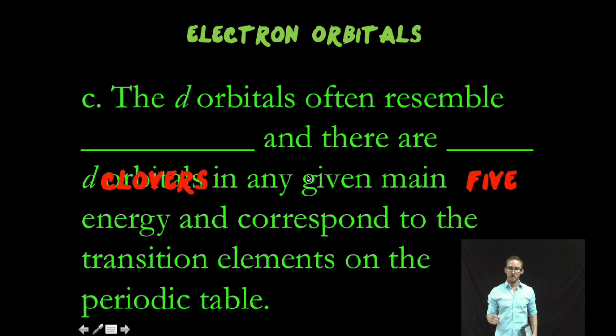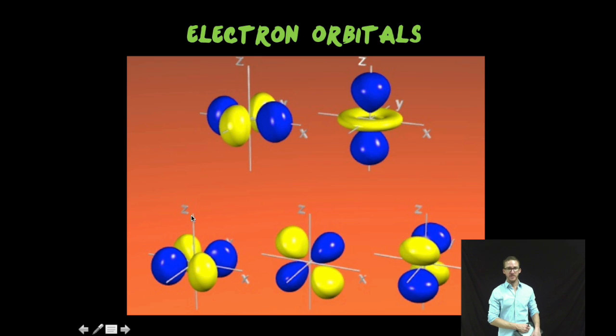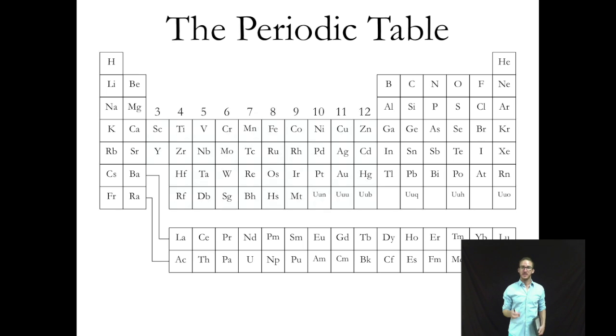Which brings us to the D-orbitals that often resemble clovers. And there are five D-orbitals in any given main energy level. And these correspond to the transition elements on the periodic table. D-orbitals look kind of clover-esque. Most of them. Again, you can only fit two electrons in each of these orbitals. So the D-orbitals together can hold a maximum of 10 electrons. Again, they correspond to 10 groups that make up your transition metals.